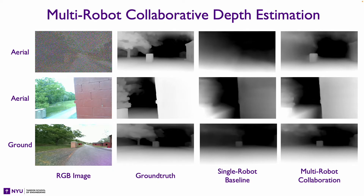We demonstrate the use case of multi-robot collaborative perception with this dataset. When one aerial robot has severe sensor noise, the robot team can communicate with each other to compensate for the sensor noise.